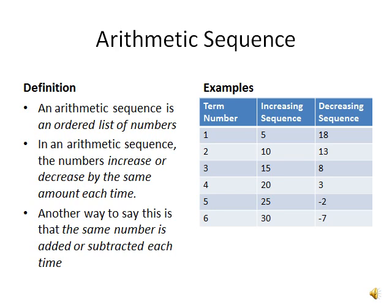The numbers in this sequence go 5, 10, 15, 20, 25, 30. This sequence increases by 5 each time.